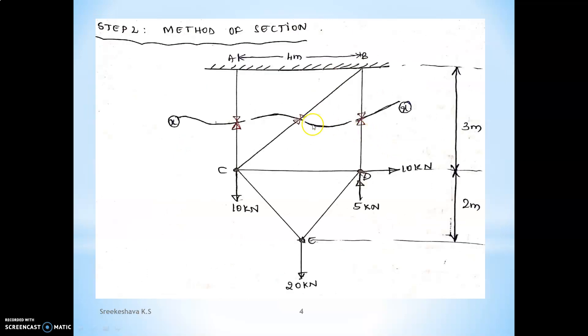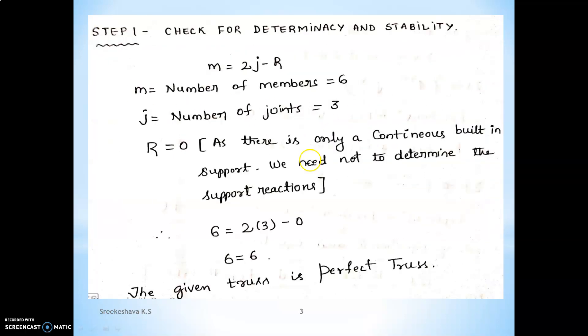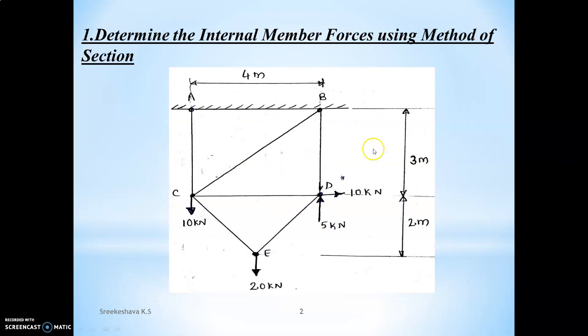In the second step, we are passing a section through the given truss. What is the condition? When we are passing a section, the condition is very simple: the unknown members should be three, not more than three. And also one more condition — two members should be from one common point. When you are passing a section here, it is cutting this, so the two members having common point C — this is allowed. This condition must be satisfied.